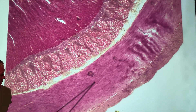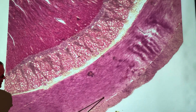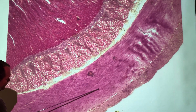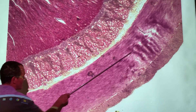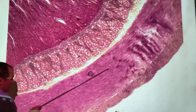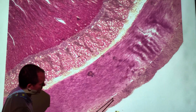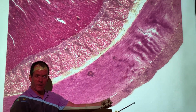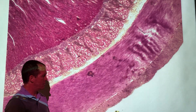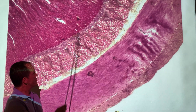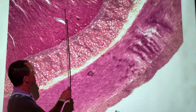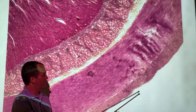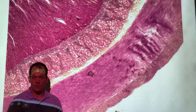Then we move out to the muscularis layer. You can see a circular layer right there — the fibers are clearly running this direction — and these fibers out here are clearly running towards us again. So circular, longitudinal tunics. To summarize the layers: mucosa, submucosa, muscularis. The adventitia is not shown on this one.